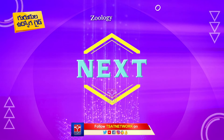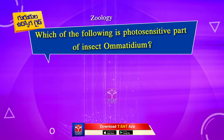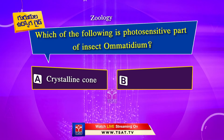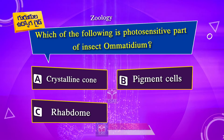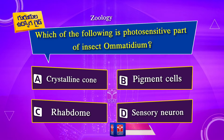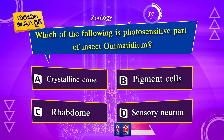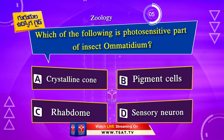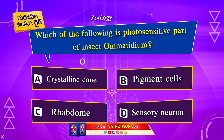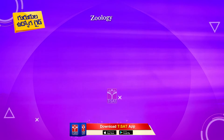Next question. Which of the following is a photosensitive part of insect ommatidium? Option A. Crystalline cone. Option B. Pigment cells. Option C. Rhabdom. Option D. Sensory neuron. The correct answer is Option C. Rhabdom.